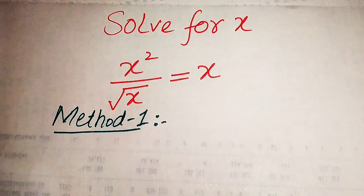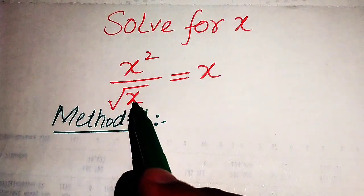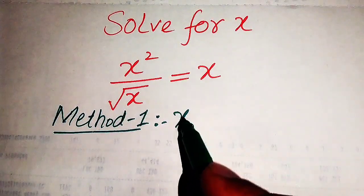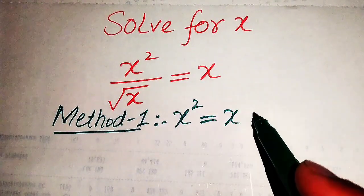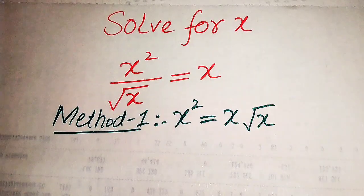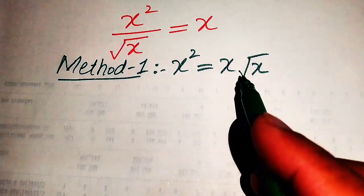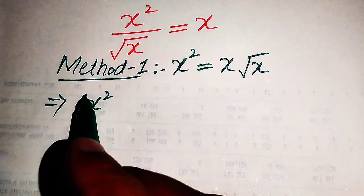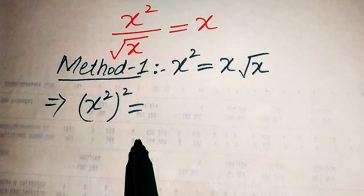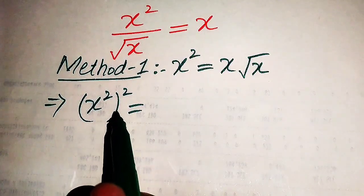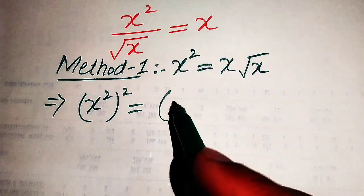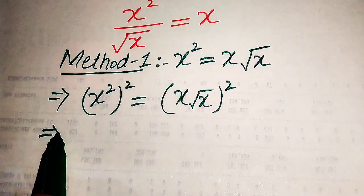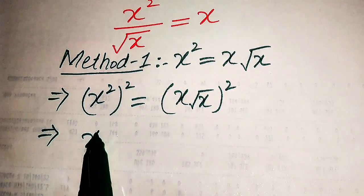Now we move toward the solution from the first method. Here the square root of x is in the denominator on the left hand side; when we move it to the right hand side it multiplies x, giving x squared equals x multiplied by square root of x. To remove the square root sign from the right hand side, we take squaring on both sides, written as (x²)² equals (x times √x)².